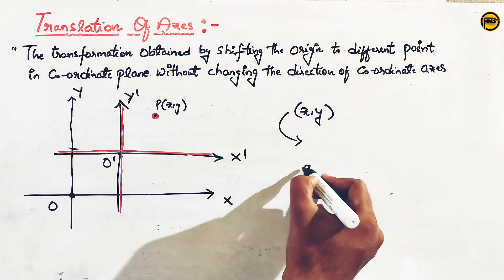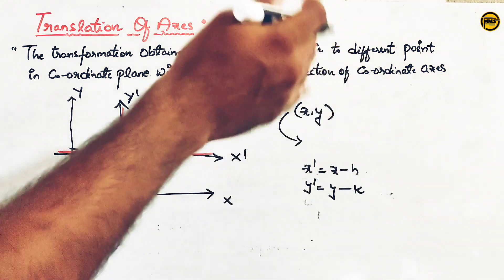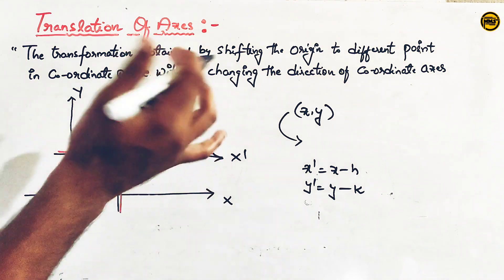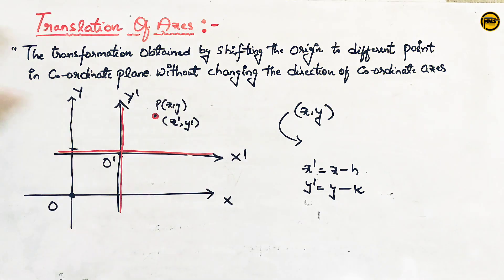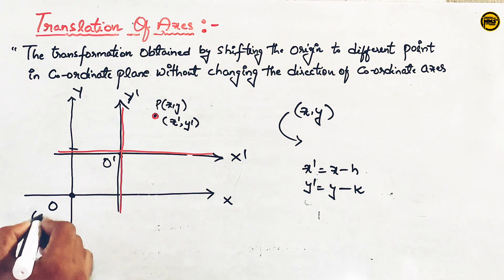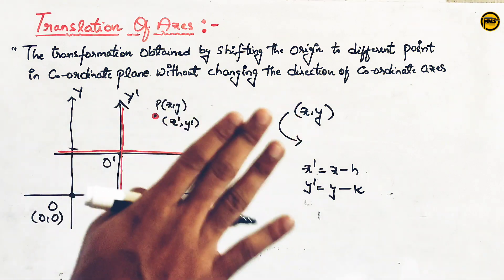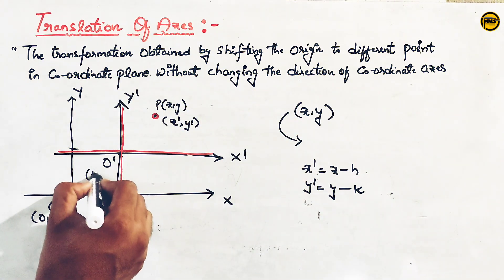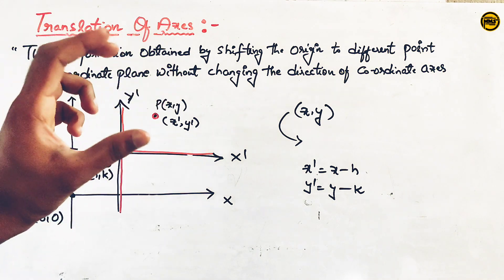In the new system, x-dash equals x minus h, and y-dash equals y minus k. The original origin position is (0, 0). When you shift the origin to a new point (h, k), new coordinates x-dash and y-dash are formed. These are the coordinates in the new system.